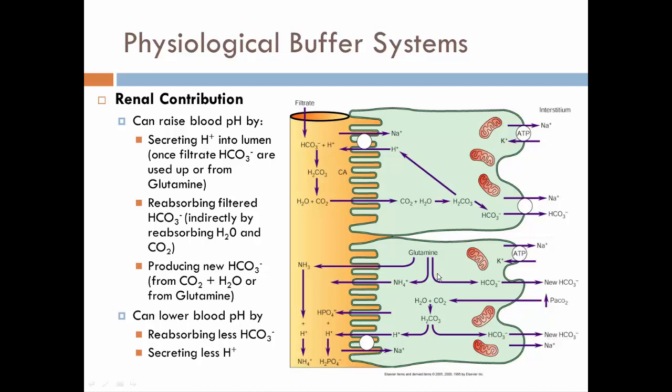I can also get new bicarbonates through the amino acid glutamine. When glutamine is broken down, it forms either into ammonia or ammonium - the NH4+, the NH3 - and then bicarbonates. Now the bicarbonates then I can reabsorb back into the blood, again adding new sources of bicarbonates, more buffers, and then that can help neutralize acids and help raise blood pH.